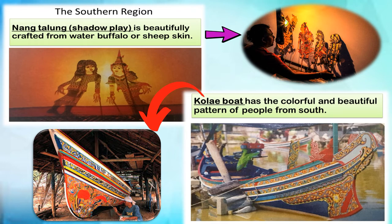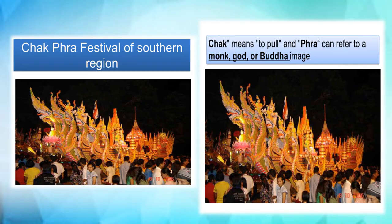Next is the southern region. There are many interesting visual art products, such as the making of shadow play characters, beautifully crafted from water buffalo or goat skin. Local fishing boat painting has colorful and beautiful patterns. There is also boat decoration for the Chak Phra ceremony, a southern festival where Chak Phra refers to pulling a monk, god, or Buddha image.